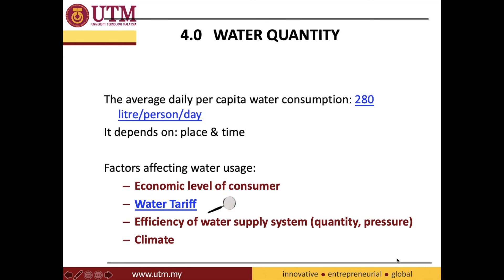The efficiency of the water supply system can also affect water usage — for instance, broken pipes mean water cannot be supplied properly, affecting consumption. Finally, climate is a factor: people in tropical countries near the equator, like Malaysia, cool themselves with more frequent showers compared to people in temperate countries. These are the main factors affecting water usage.